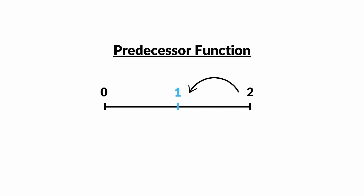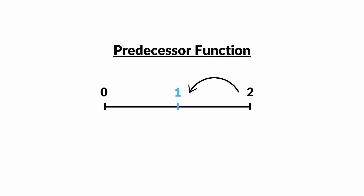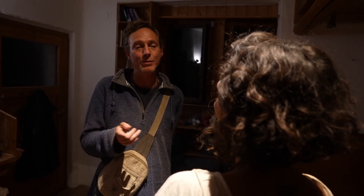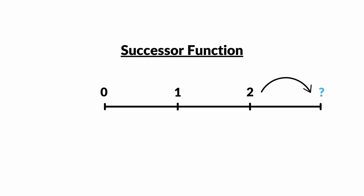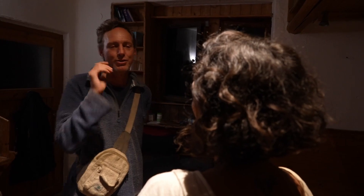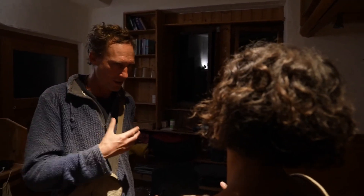How then can we get to the number three? We need a successor function. We've got a predecessor function, so now we're going to have to introduce another thing called squaring. We talk a lot about rotational squaring — squaring is a decompression of number space into a higher dimension.